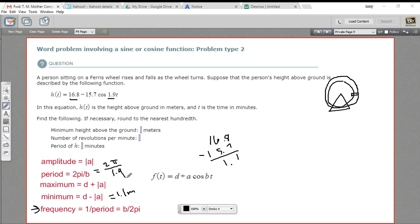And in this case, they are asking for decimals, and they're asking us to round to the nearest hundredth. So let me pull out my calculator here. And I'm going to take π and multiply it by 2 and divide it by 1.9. And I'm getting 3.31.